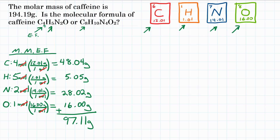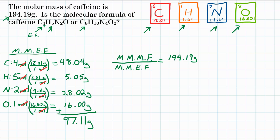Now we're going to compare the molar mass of the actual molecular formula with the molar mass of the empirical formula C4H5N2O. The problem said the molar mass of caffeine is 194.19 grams. We divide that by our empirical formula molar mass of 97.11 grams. This tells us how many times bigger the molecular formula is than the empirical formula. Dividing 194.19 by 97.11 gives us right about 2.